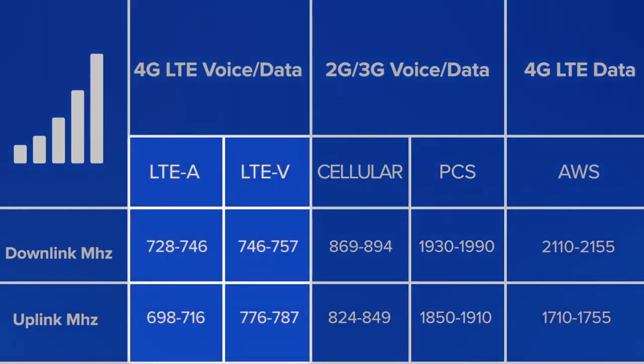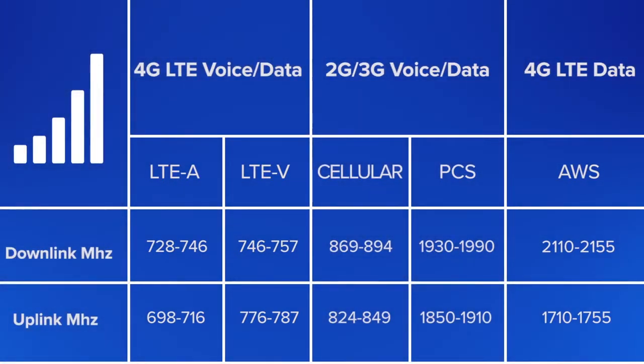LTE, or 700 MHz, and AWS, or 2100 MHz bands are usually used for 4G data. Some carriers are doing voice over AWS, which our amplifiers will support as well.